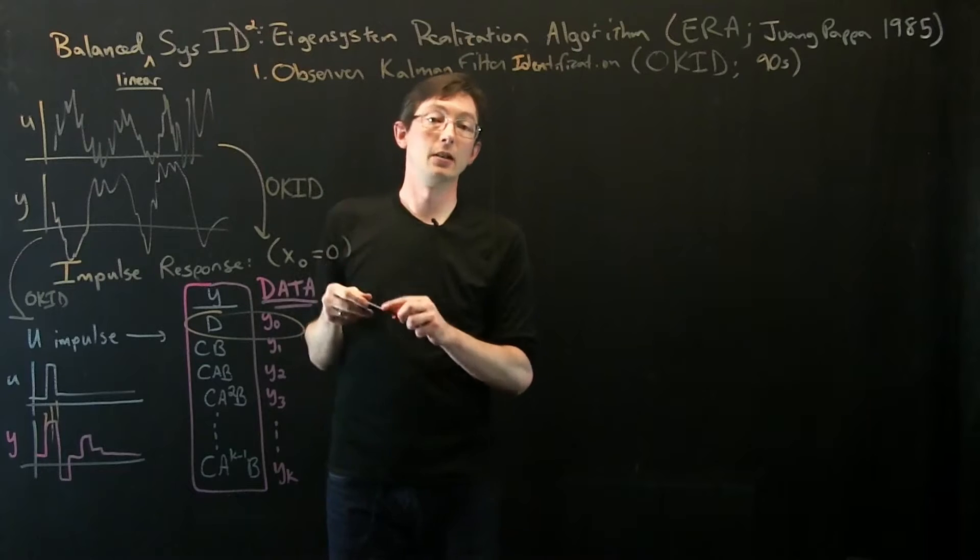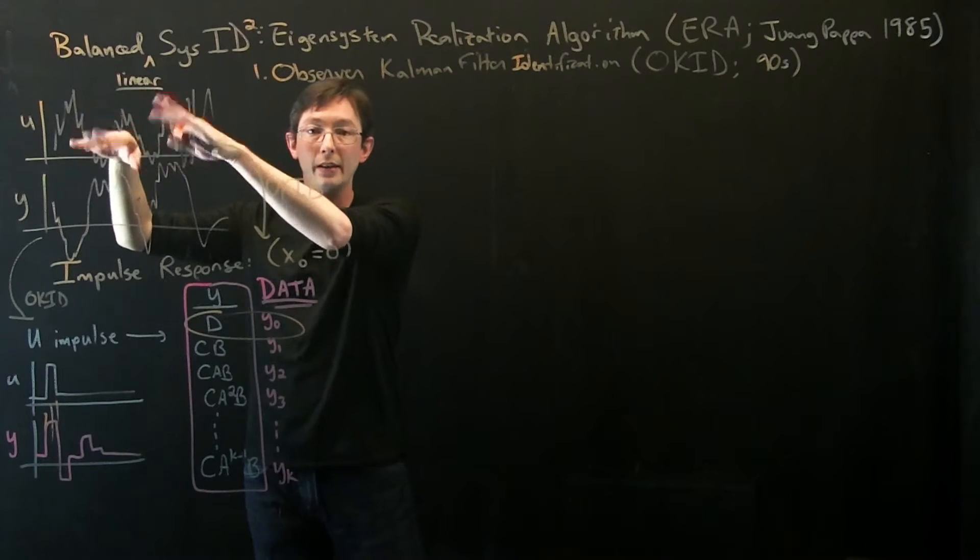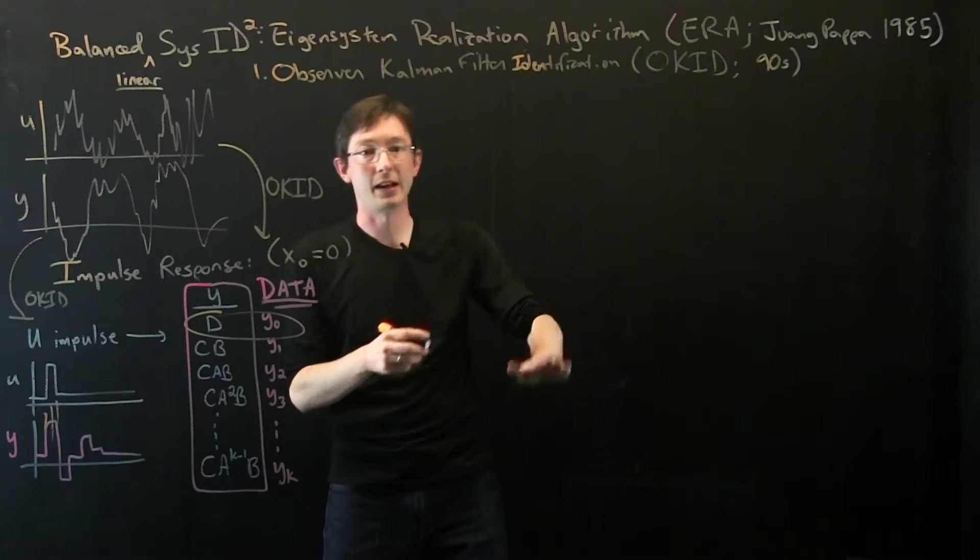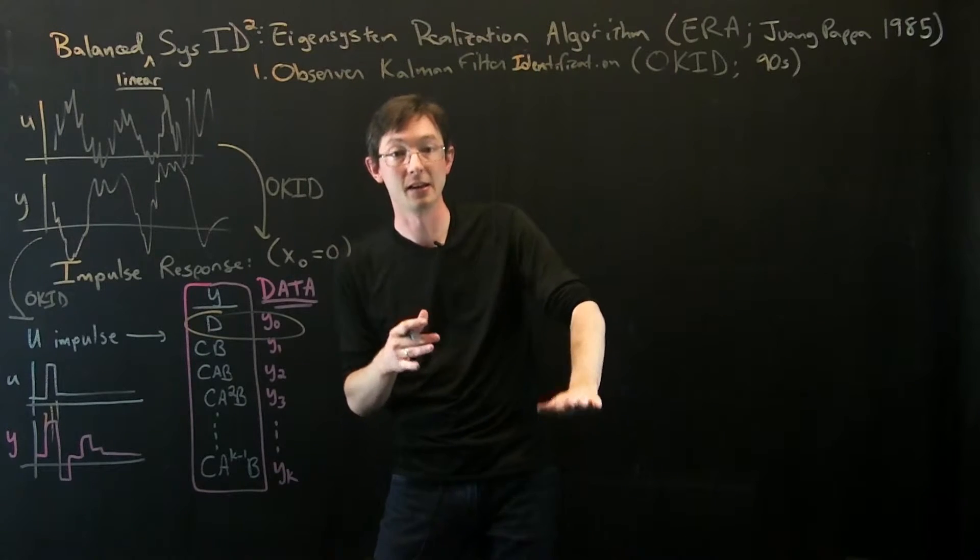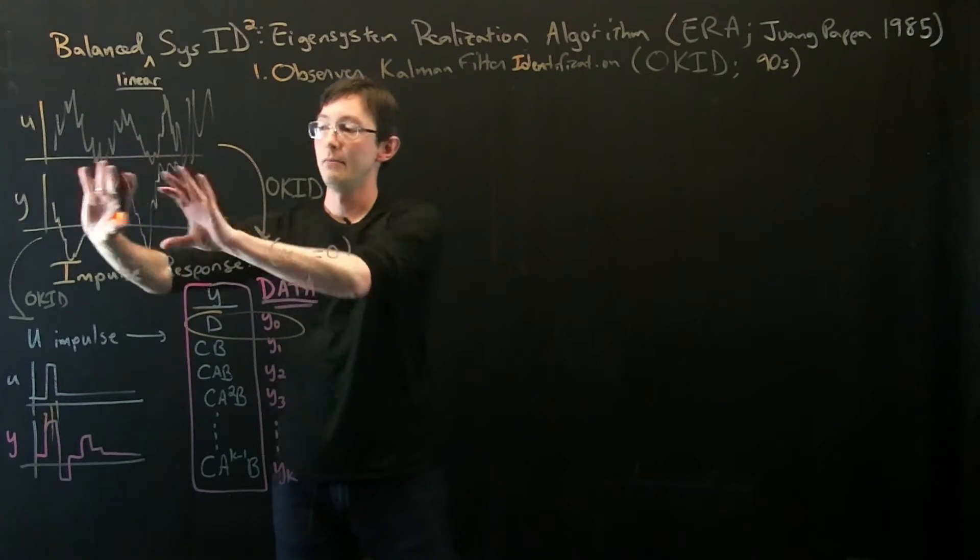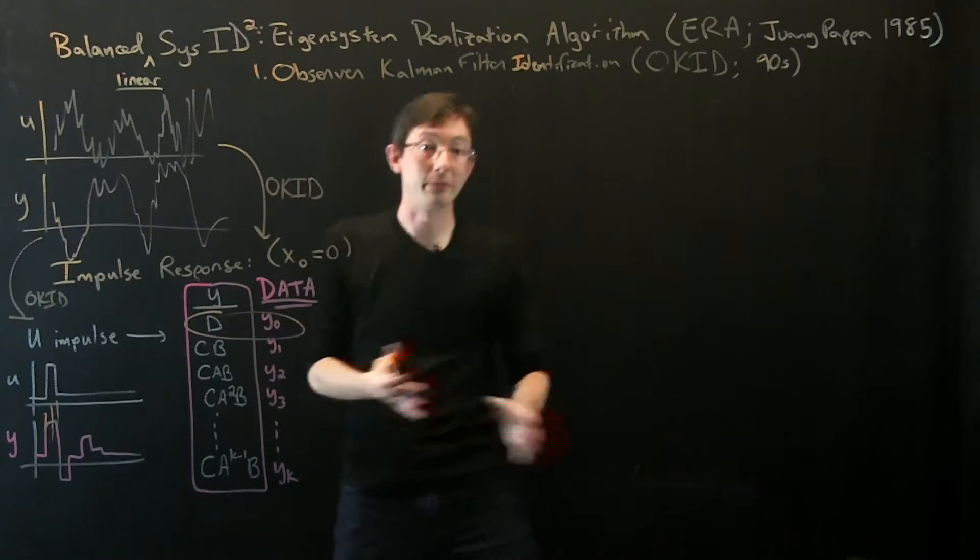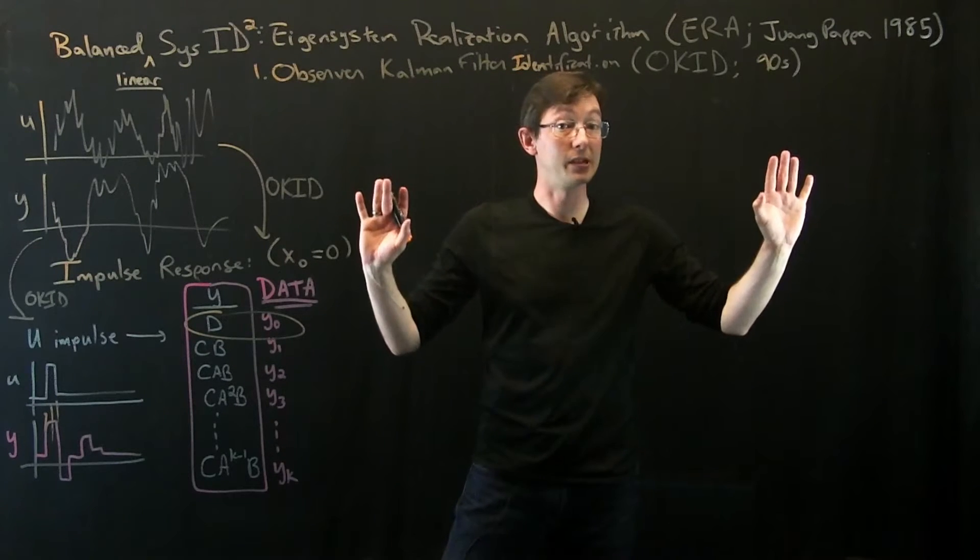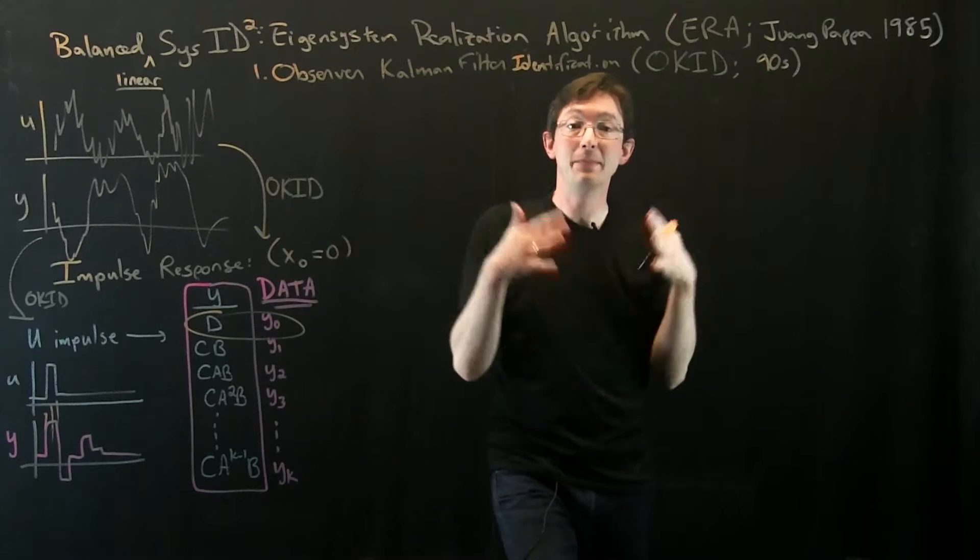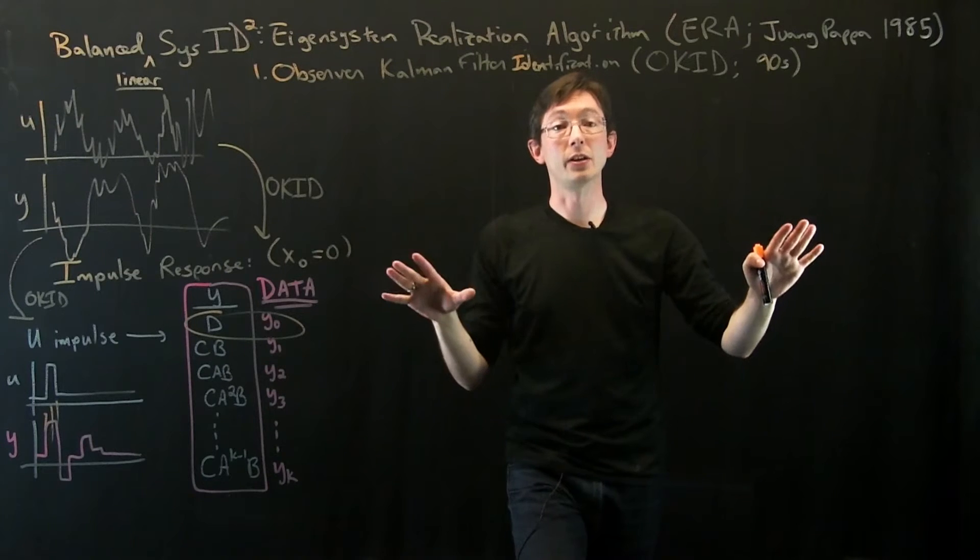And then you can use those measurements with the ERA to get a reduced order model. So if you have if you can't do an impulse response or you have really noisy data or it takes a really long time for it to decay to zero, you could first do Observer Kalman Filter and then do Eigensystem Realization Algorithm. So you can give it pseudo-random rich input data, kick the system, maybe hit the gas and hold it down for a second, let go, hold it down for two seconds, let go for three seconds. Get a pseudo-random input, measure the output, get your impulse response estimated and then run it through ERA. That's the procedure.